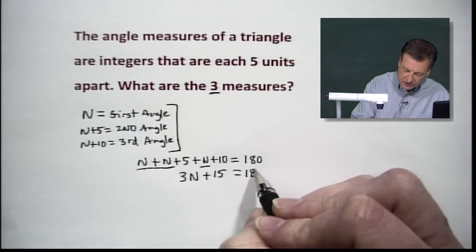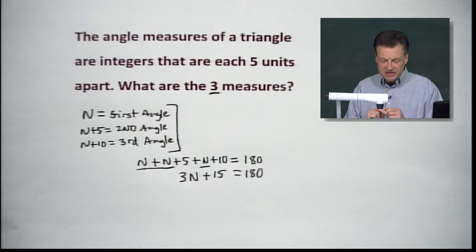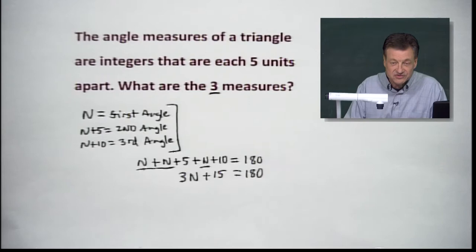And we need to move that 15 over. We need to get rid of the three somehow. Then we'll have N all by itself. That's what we're trying to do is get the variable, variable N, all by its lonesome there, in this case, on the left-hand side, very easy to work with. So let's do it.